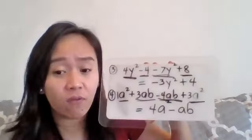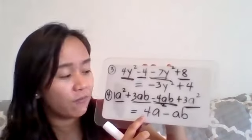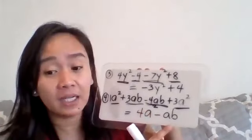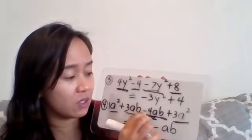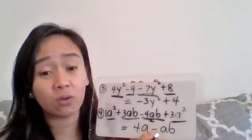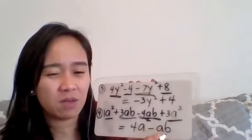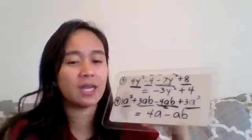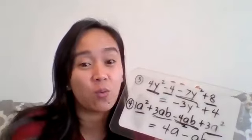Therefore, your answer for the fourth example is 4a² - ab. So again, since 3 minus 4 is negative 1, that should be negative 1. So 1 times ab is just ab. You don't have to write negative 1 or the 1. So that's it.